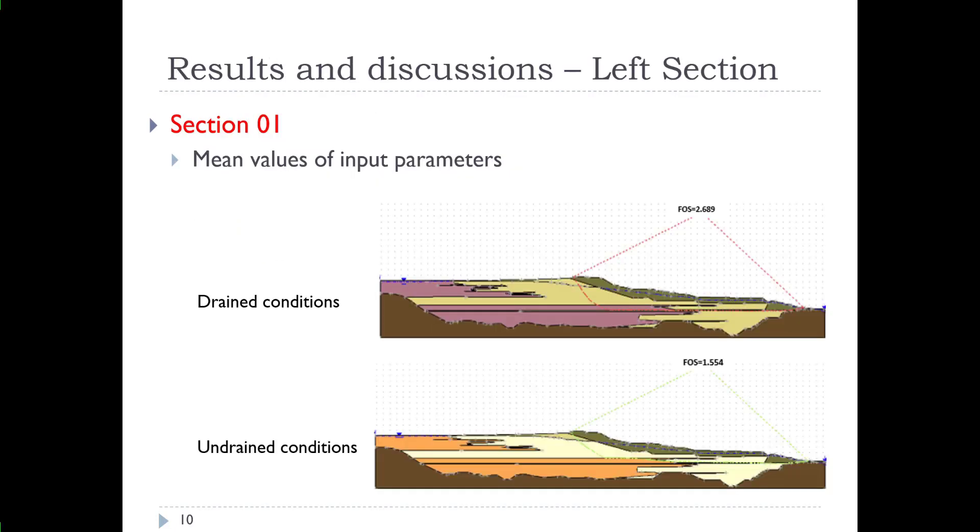So on the left section, which is section 01, if we use the mean values of the input parameters, you can see the factor of safety calculated for both drained conditions and undrained conditions, and the resulting location of the factor of safety. So for drained conditions, we have a factor of safety of 2.689. For undrained conditions, we have a factor of safety of 1.554. So still quite high and certainly in safe conditions.